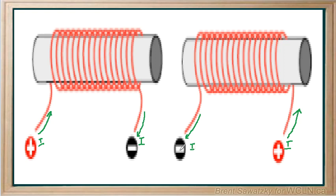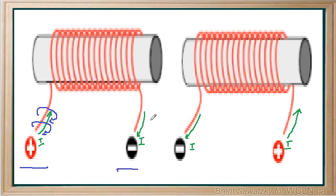Once we've established the current, let's identify what that current is causing as far as a magnetic field around that wire. Right-hand rule — let's start on the left here. If I were to do the right-hand rule there, my thumb would be pointing into the screen, and I would see that the magnetic field around that wire would look like this. For the second one, the thumb would be coming out of the screen, and we would see the magnetic field in this direction.